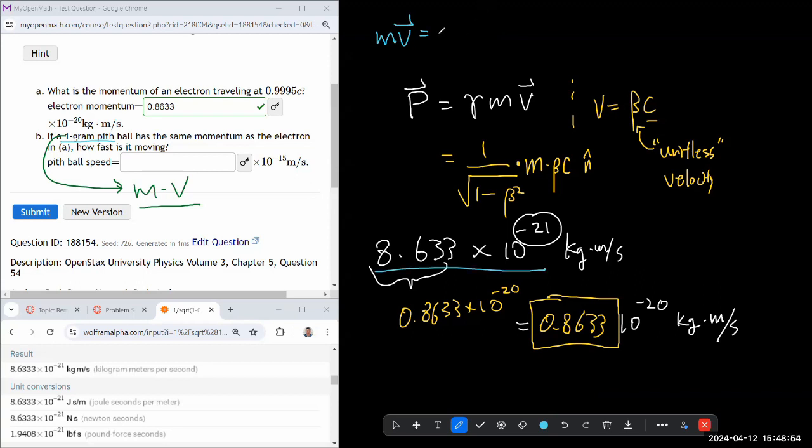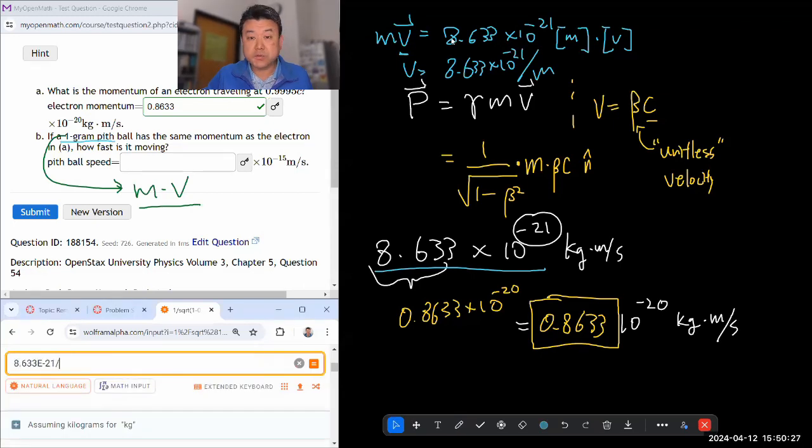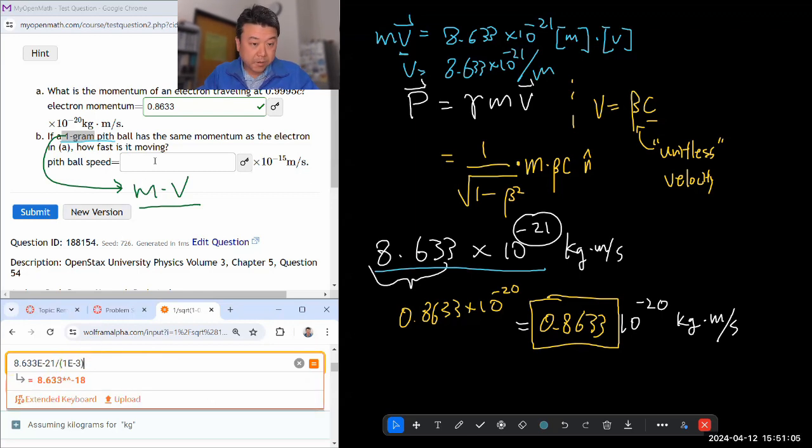Let me set that equal to the electron momentum. 8.633 times 10 to the minus 21. And when you look at kilogram times a meter per seconds, there's one for the mass and there's one for velocity. So for the speed of the pitch ball, I'm solving for V. I'm just saying, so V is equal to this value divided by mass in kilograms. So V is 8.633 times 10 to the minus 21. That's the right hand side there. So I'm solving for V. M goes there. So for that M, I have to use the one gram pit ball. So it's going to be this thing divided by one gram times 10 to the power of minus 3.